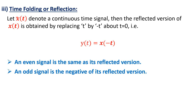Now consider the third operation, that is time folding, also known as reflection. If x(t) is a continuous time signal, then the reflected version of x(t) is obtained by replacing t by minus t about t = 0. That is, y(t) = x(−t), where t is replaced by minus t. So here y(t) is the reflected version of x(t). An even signal is the same as its reflected version, because a signal is said to be even if x(t) = x(−t). So x(t) and x(−t) are both the same, and therefore an even signal is always the same as its reflected version.